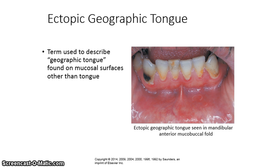Ectopic geographic tongue is a term used to describe geographic tongue found on mucosal surfaces other than the tongue. The picture on the right shows an ectopic geographic tongue seen in the mandibular anterior mucobuccal fold.